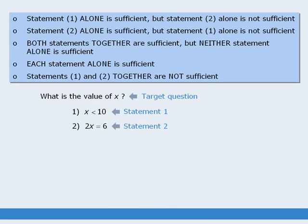Finally, we have five answer choices. These answer choices are the same for each and every data sufficiency question, so be sure to become very familiar with them. On the day of your test, you will have five radio buttons, and you must select one of them for each question. Most GMAT resources will label these options from A to E in order to refer to each of them, and that's what we'll do here.